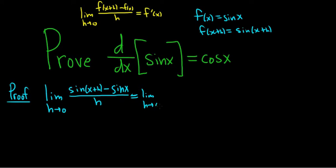Actually, there's another way to do this using L'Hopital's rule, but let's go ahead and use the trig identity instead. So the identity for sine of x plus h is sine x cosine h